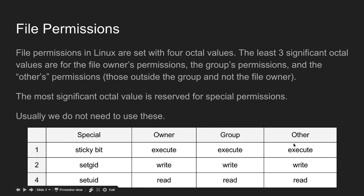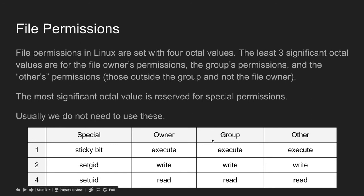So as you can see, for the least significant octal: one means you can execute, two means you can write, four means you can read, and six (two plus four) means you can write and read. The next value is for group permissions, the next for owner permissions.